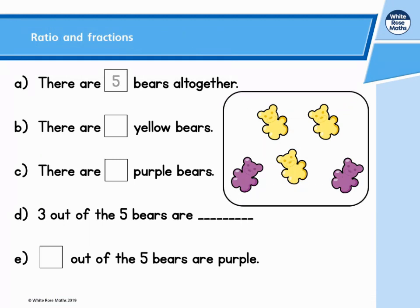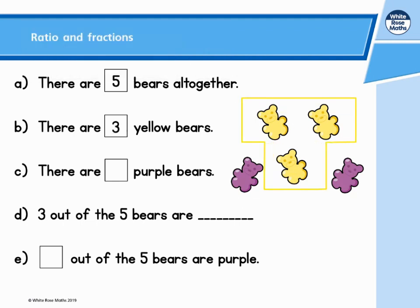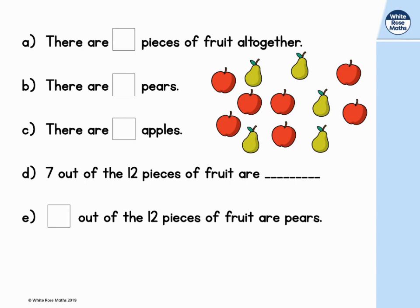In the picture there are clearly five bears altogether. There are yellow bears. How many yellow bears? Well we can see that there are three yellow bears. We can also see that there are two purple bears. So three out of the five bears are yellow, and two out of the five bears are purple.